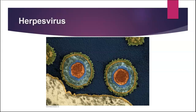Herpes virus is another common virus — again, this is the one that causes fever blisters, and there are various other conditions caused by different types of herpes viruses. This diagram, which was actually in your book, shows the herpes virus attaching to cells.